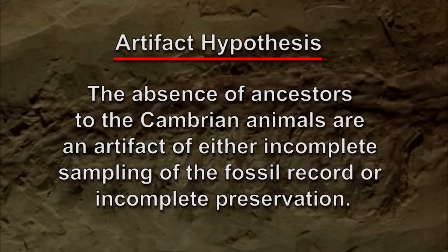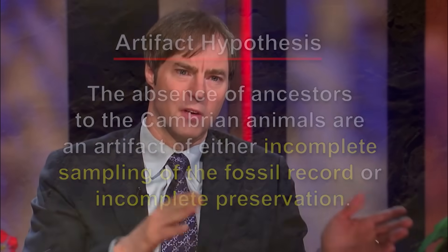The technical way of referring to that is the idea that the missing ancestral animals to the Cambrian animals are missing as an artifact of either incomplete sampling of the fossil record or as a result of incomplete preservation. Now, 150 years since the publication of the Origin of Species and given all these different fossil finds, no one really can say we haven't looked hard enough anymore.